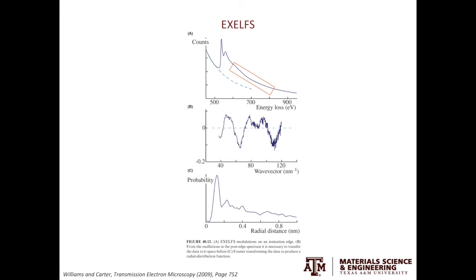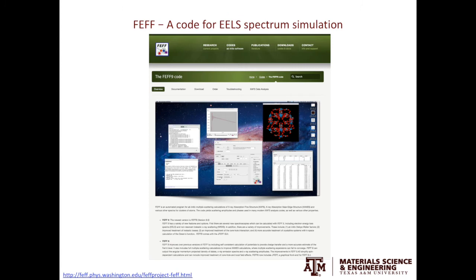I will only spend one slide on EXELFS, mainly because I have very limited understanding on this topic myself. In EXELFS, the ejected electron does not fill an empty state of the atom, but rather escapes outside the atom. The escaped electron will interact with the nearby atoms, thus providing local structural information. The region highlighted in the box in the EELS spectrum is the EXELFS. After removing the background and transforming that into K-space, you see something like in B. If you perform the Fourier transform of B, you get the radial distribution function. If you are interested in simulating the fine details in EELS spectra, you can purchase a software called FEFF, developed by Professor John Rehr and his team at the University of Washington.